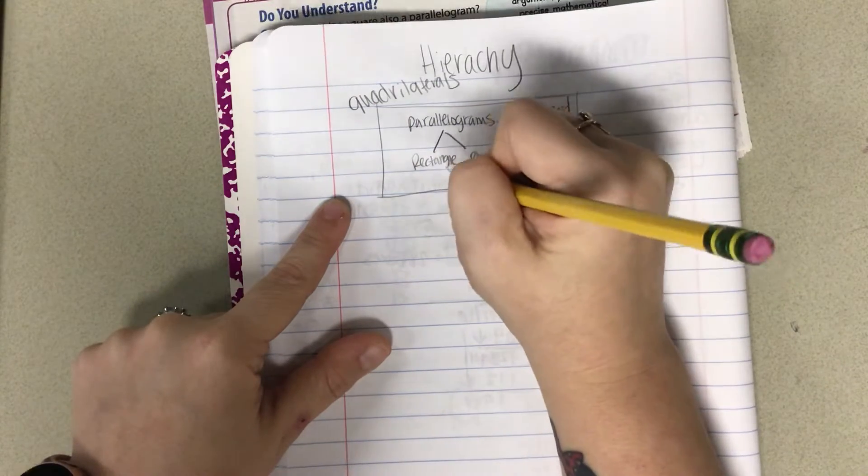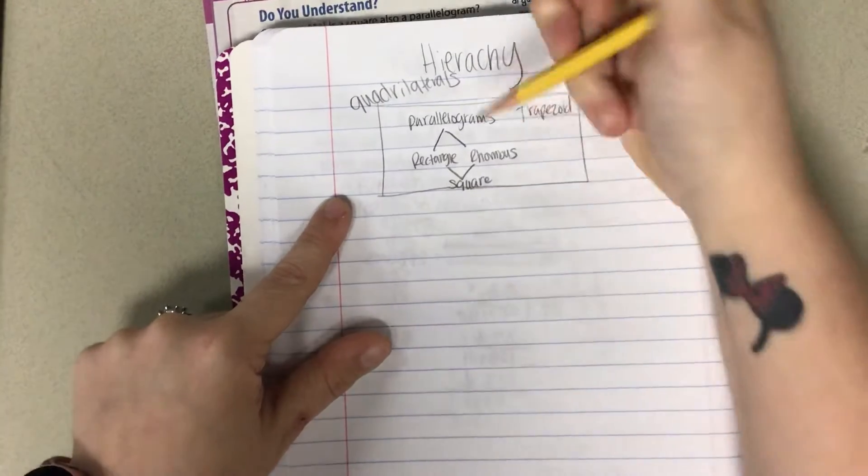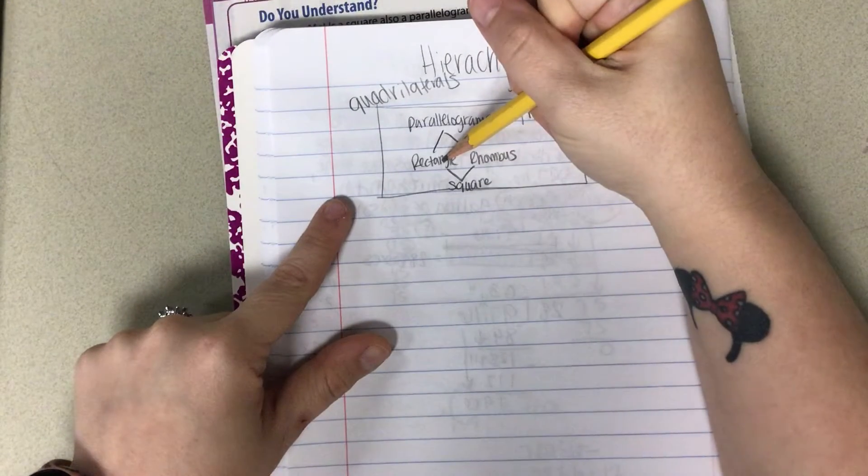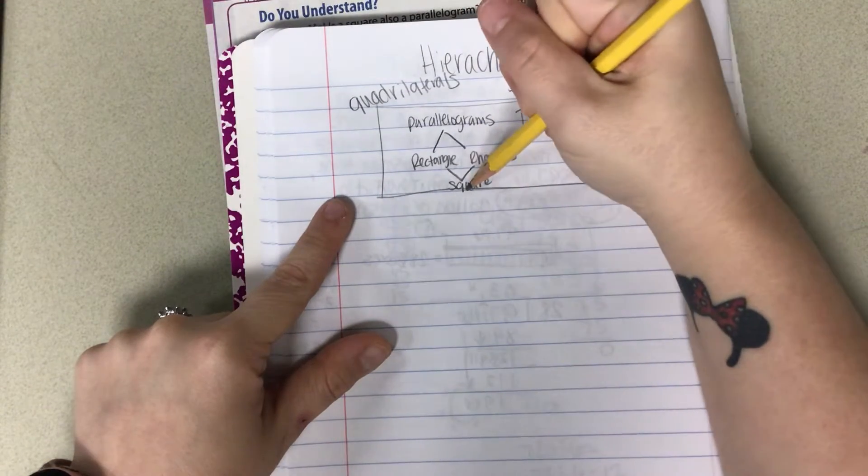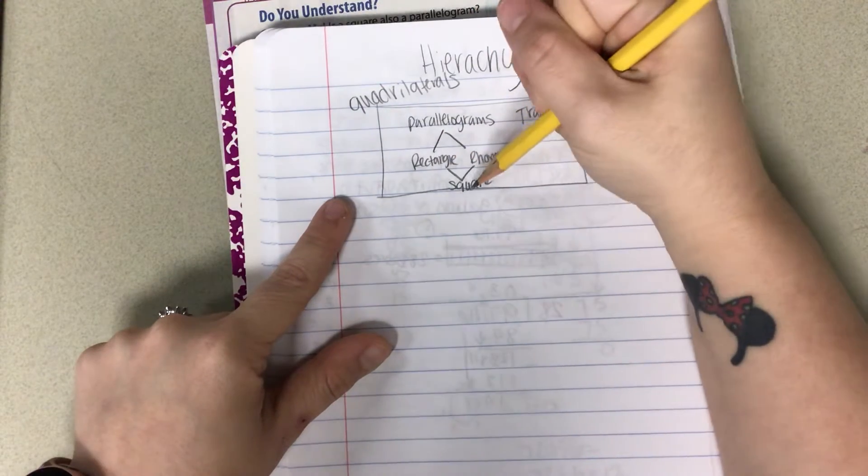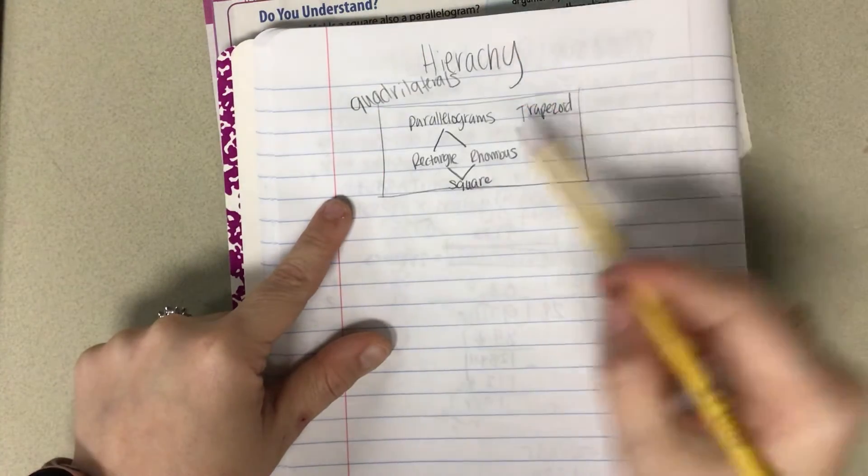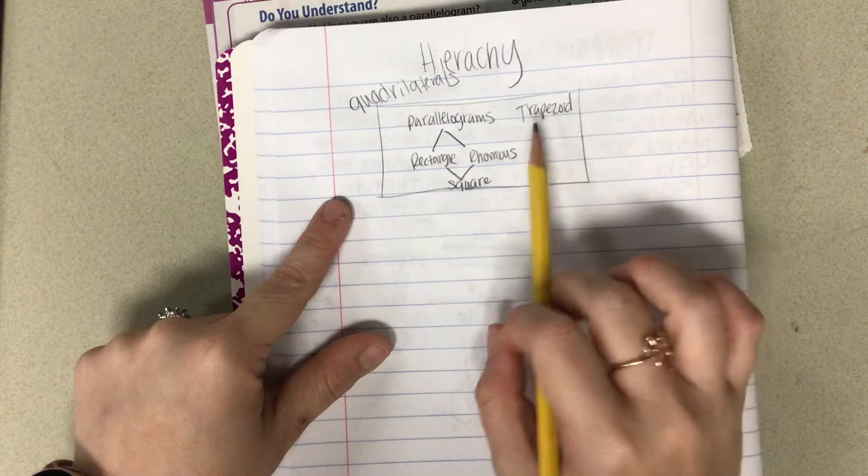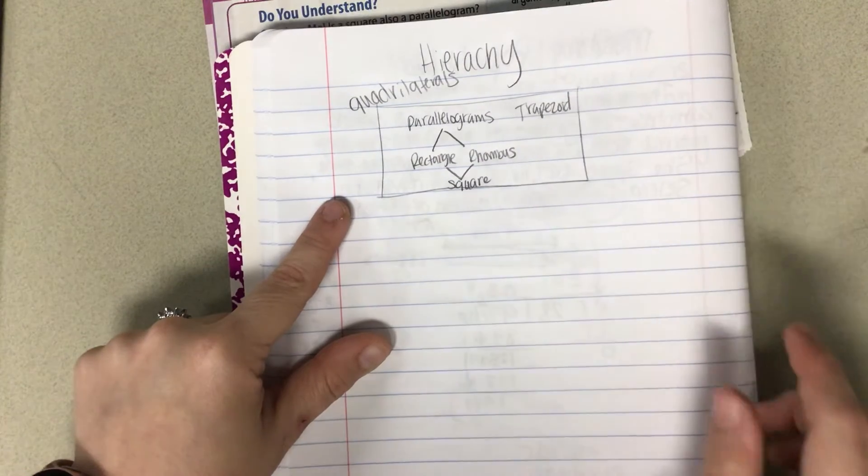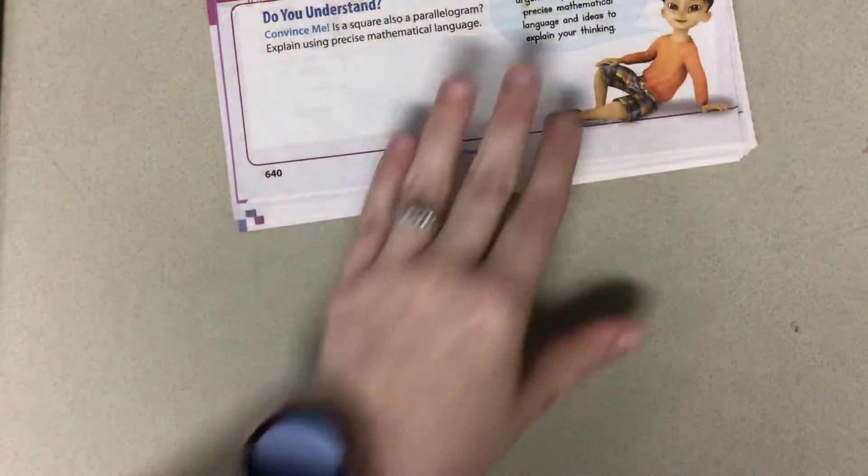But both of those things also have a square in common because a rectangle cannot be a square, but a square can be a rectangle. A rhombus can't be a square, but a square can be a rhombus. So they all kind of flow together, and then you kind of have trapezoid over here all on its own because it's the only one that has one pair of parallel sides. So this is kind of a great chart that we'll continue using as we go on.